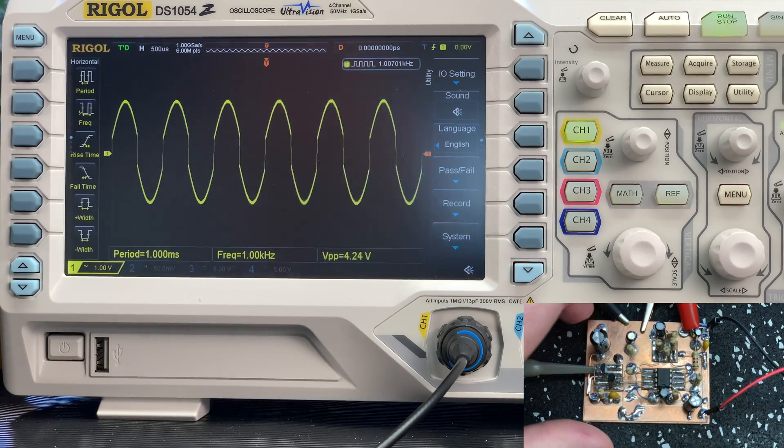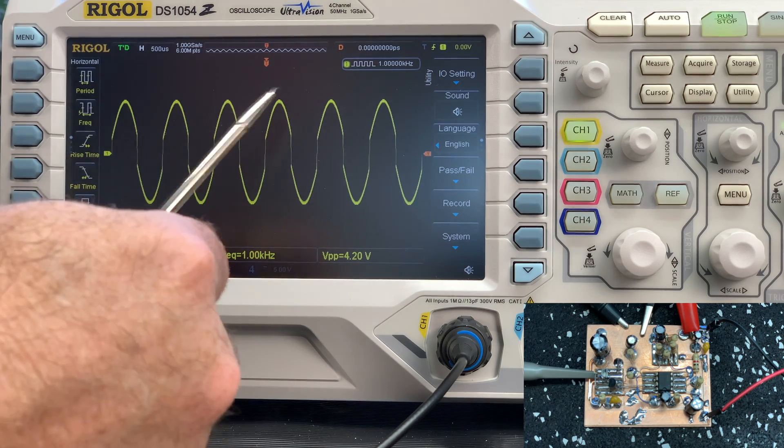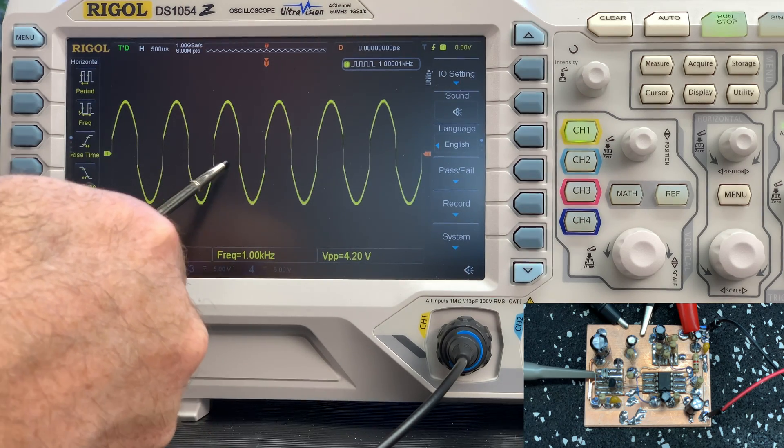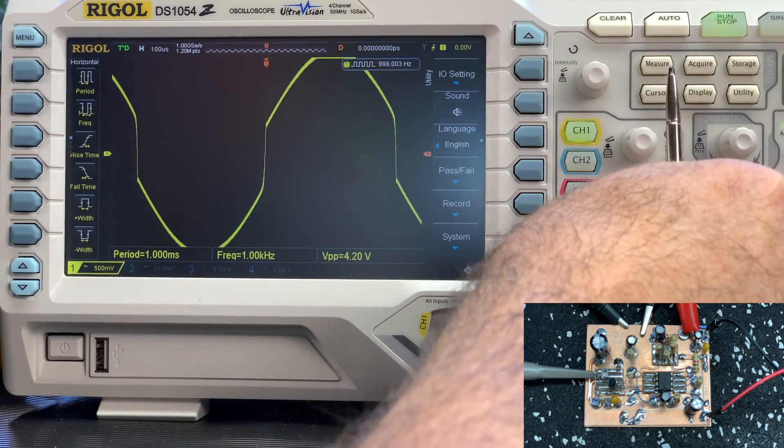Here's a look at the signal at the bases of Q1 and Q2. With the transistors being inside the feedback loop of the op amp U1B, crossover distortion is minimized as long as the op amp slew rate is adequate.